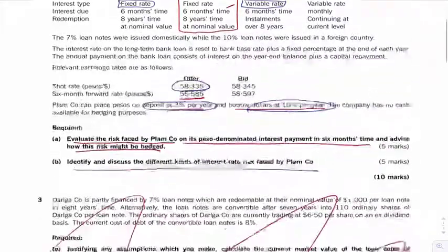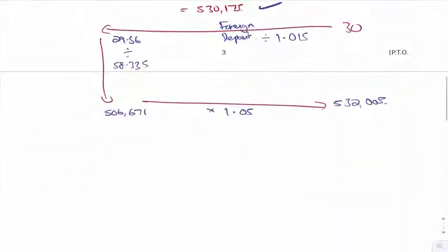But their fixed rate loan is 20 million out of the 24, out of the 27. So